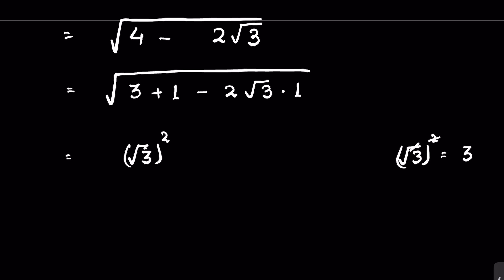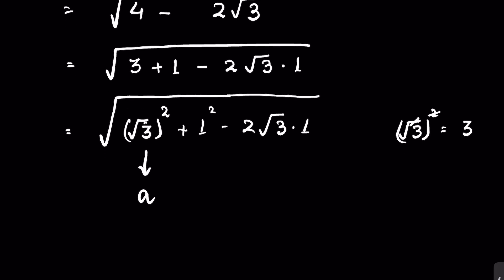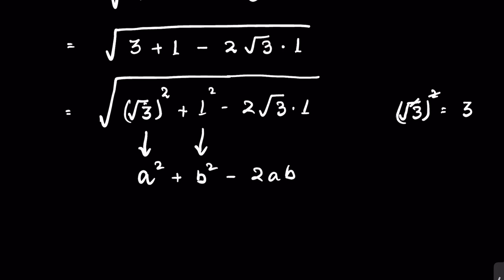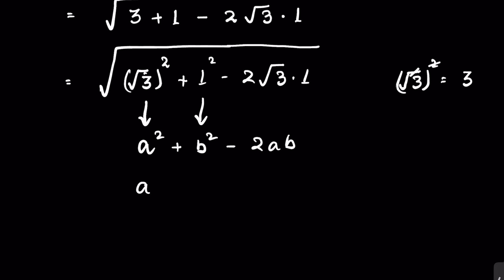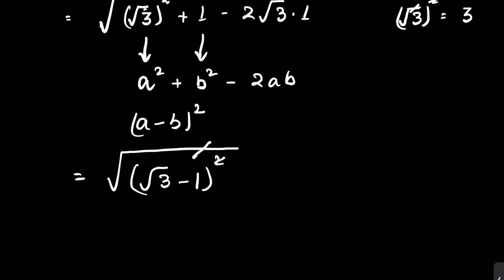So we have √((√3)² plus 1² minus 2·√3·1) under the square root. If we consider √3 as a and 1 as b, this is in the form a² + b² − 2ab, which is the algebraic identity equal to (a−b)². So we can write it as √((√3 − 1)²), and removing the square root with the square gives us √3 minus 1.